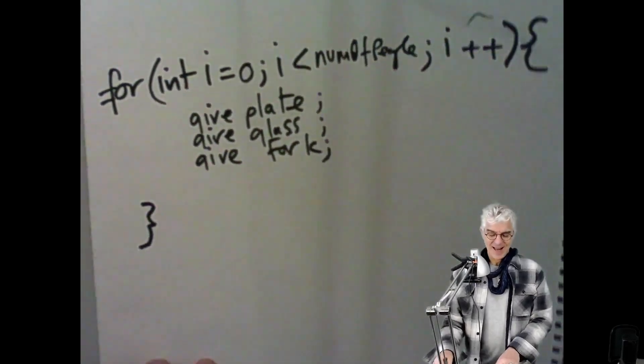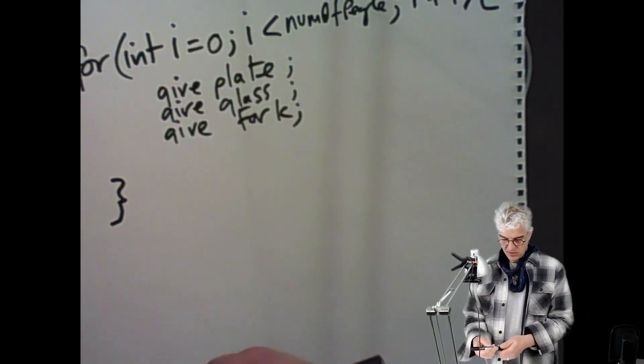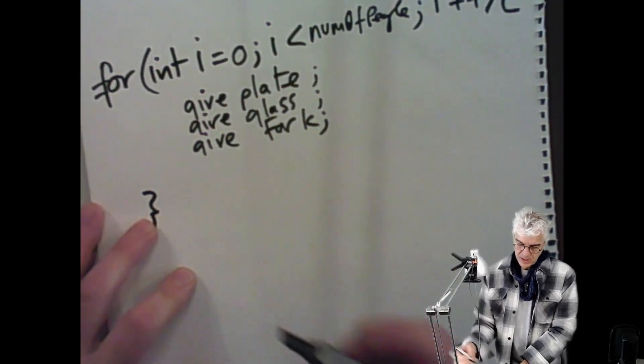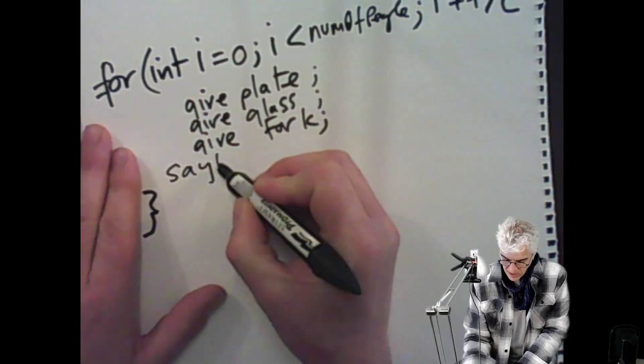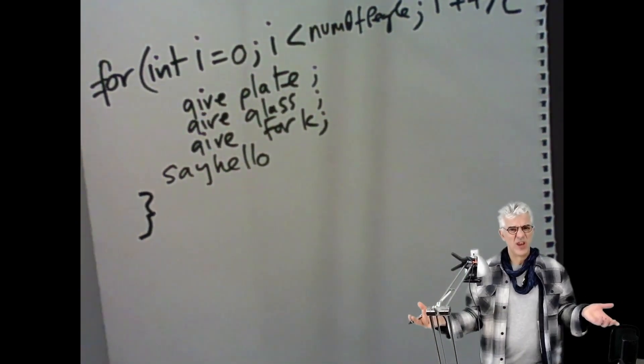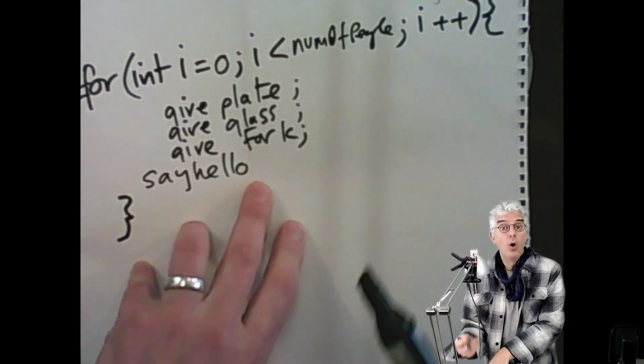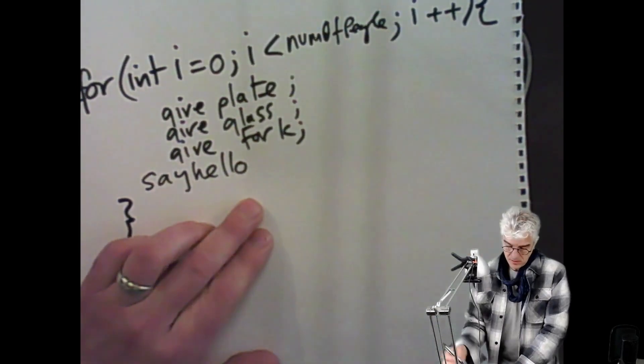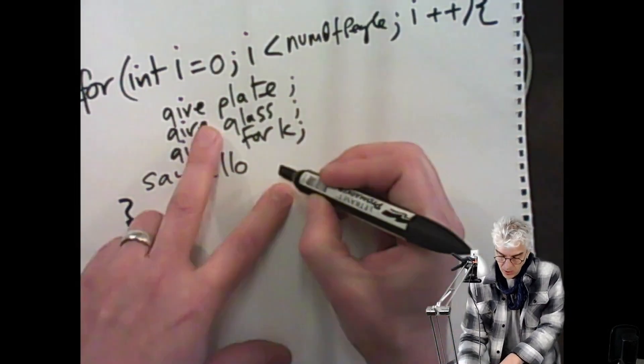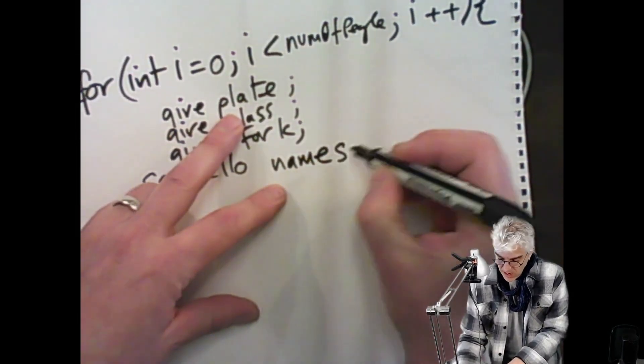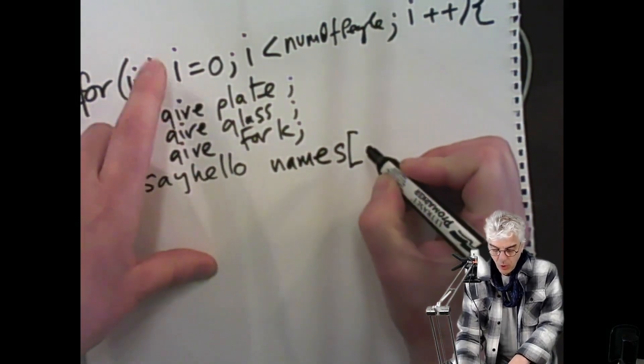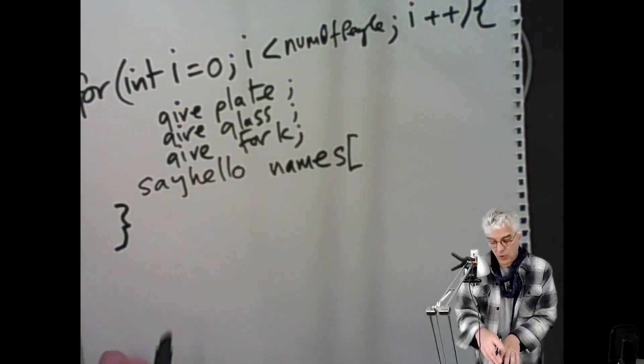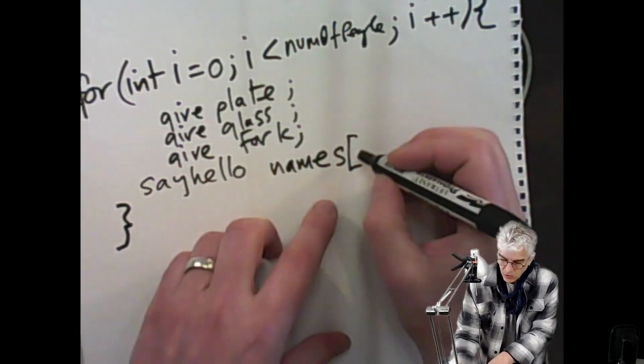But what I could do, knowing this, if I've made my list names, I could say, give a plate, give a glass, give a fork, and then say, hello. And now I need to know the name of the person I'm saying hello to. So I could say, find out what I put in this vector list, because that's got everyone's names in it. So if I'm giving something to person zero, say hello to whatever name I put into names, not at position zero, but at position i. So each time I run this, I say, look at the names vector, look at position i. Zero, one, two, three, four, etc. Pull out the name and say hello to them. So I'd say names i.